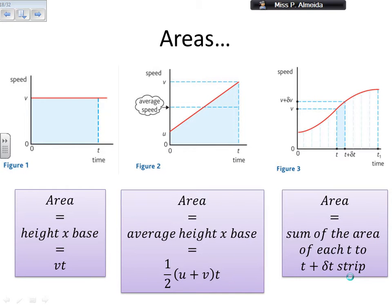To get the areas: for zero acceleration you get a rectangle, so the area is height times base — simply speed times time. For constant non-zero acceleration, the area is the average height times the base. You can split it into a triangle and a rectangle and add the two areas, or simply calculate the area of a trapezium: one half of U plus V, all times T. This gives you the average height times the base.